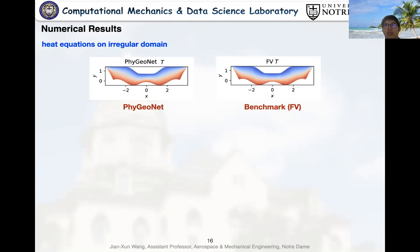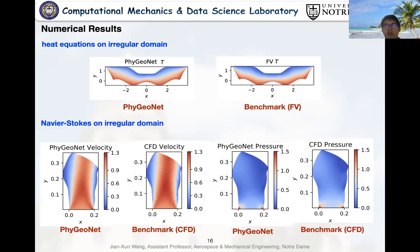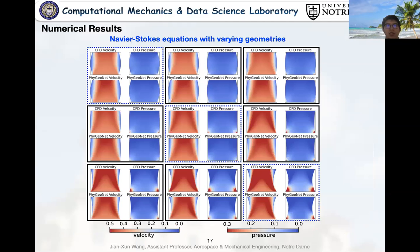In the second case, we apply the PhyGeoNet to solve the Navier-Stokes equation within patient-specific vascular domain. The first and second column shows velocity predictions of PhyGeoNet and CFD reference. The third and fourth column show the comparison of pressures. Both the velocity and pressure agree very well with CFD reference. Here, if we look at the pressure prediction carefully, we can find that the PhyGeoNet can predict the pressure in the corners accurately, which is very hard to achieve using fully connected physics-informed neural networks.